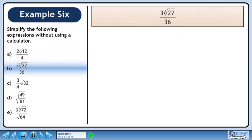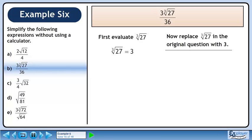In part B, we'll simplify 3 times the cube root of 27 over 36. First, evaluate the cube root of 27, which equals 3. Now replace the cube root of 27 with 3 in the original expression. This simplifies to 9 over 36, and finally reduces to 1 over 4.